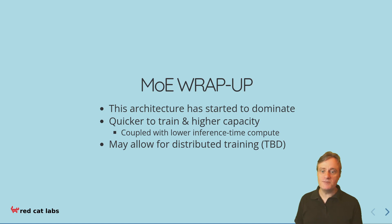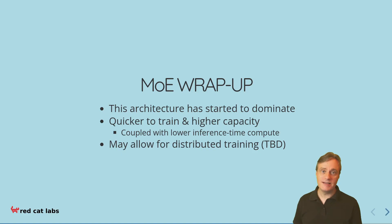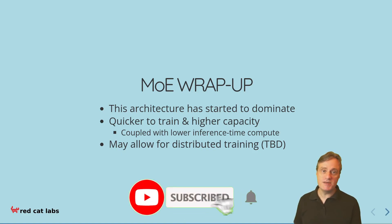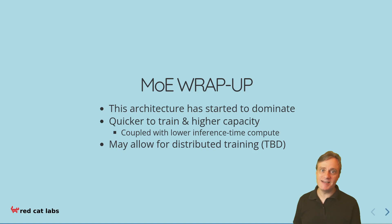To wrap up: new releases of open source models show that MoEs are starting to dominate, and they may actually suit the hardware we can get into our hands even better than dense models. Assuming good infrastructure and training techniques, MoEs can be quicker to train even with their higher capacity, and the overall benefit to end-users is lower inference time compute. There may also be interesting directions allowing their training to be done in a more distributed way, which may fit the teams at the Frontier Labs — though they're keeping that tightly under wraps.